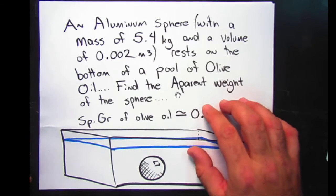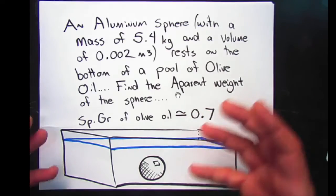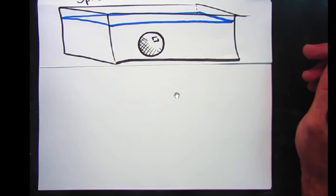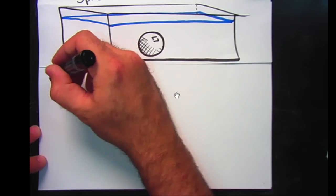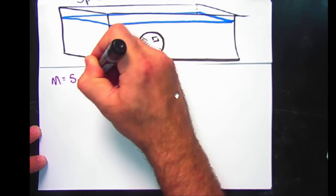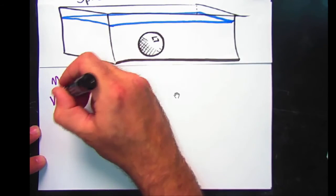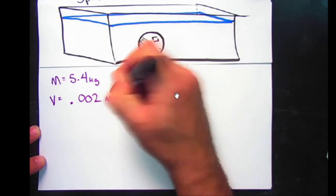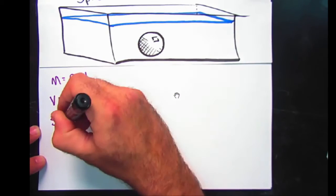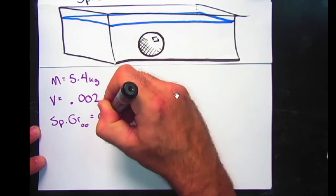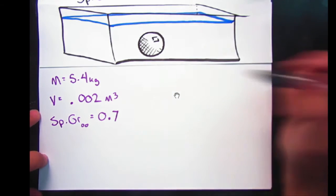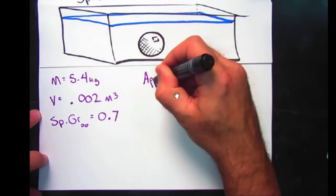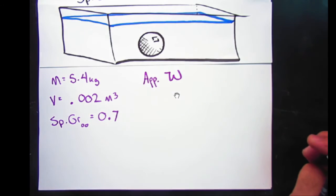The apparent weight is the weight that it appears to have while it's in the olive oil. If you've ever tried to lift someone up while you're in a pool, they appear to be a lot lighter. That's their apparent weight. First thing we have to do is list all the information that's been given. I do know that the mass is 5.4 kilograms. I know that the volume is 0.002 meters cubed. It was given that the specific gravity of olive oil is 0.7. And I have to ask myself, what is it I'm trying to find? I'm looking for the apparent weight of this object.